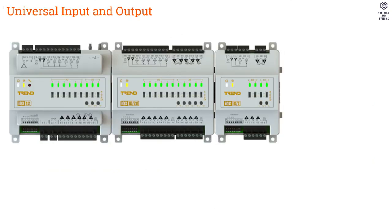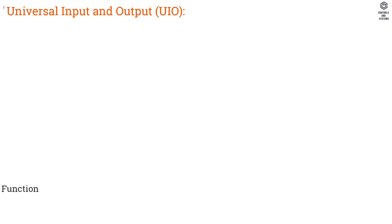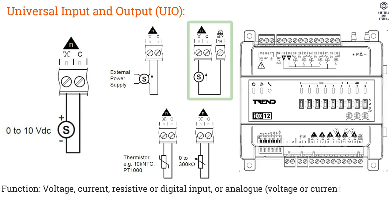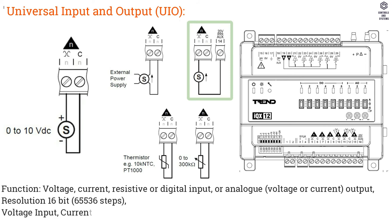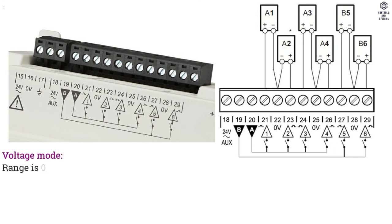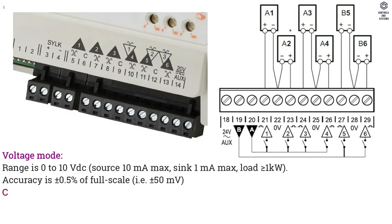Universal Input and Output: Number of channels: IQX12 is 3, IQXIO7 is 2, IQXIO20 is 5. Function is voltage, current, resistive, or digital input, or analog voltage or current output. Resolution is 16-bit. Voltage, current, resistive, and digital inputs are same as UI. Analog Output — Voltage Mode: range is 0–10V DC, source 10 mA maximum, sink 1 mA maximum, load greater than 1 kΩ, accuracy ±0.5% of full scale.